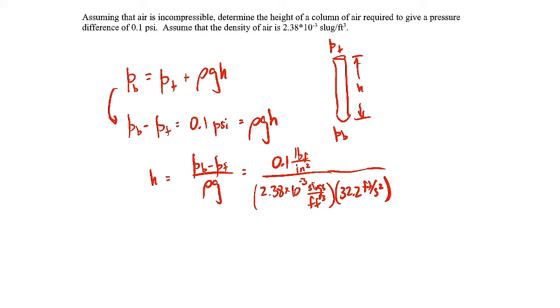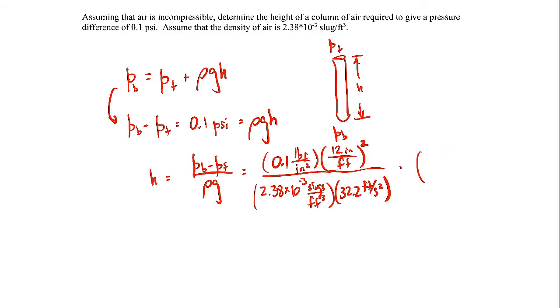And then there's a unit conversion that we ought to do to help with the units here. Let's convert the numerator into square feet instead of square inches. We know that 12 inches is in a foot, and we'll square that. The other thing is that one pound force is equal to 32.2 slugs feet per second squared. That has to be in the denominator.